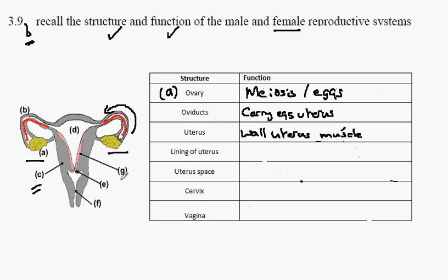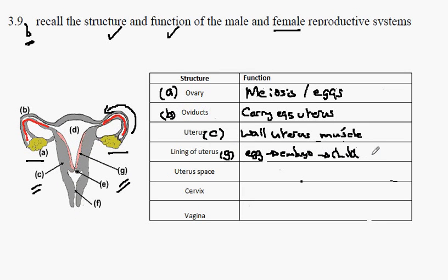The lining of the uterus is labeled G. This lining accepts and develops the fertilized egg. The fertilized egg would develop here into the embryo and the child, and we would see the development of the placenta. So the embryo implants into the wall of the uterus.